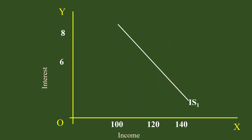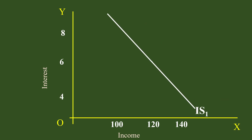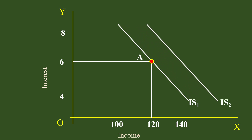We shall now turn to shifting of the curves. First, we shall take the shifting of the IS curve. Shifting in simple terms means changing the position. Shift can take place in two ways. IS1 is in its initial position. Point A on it shows Rs.120 income and 6% interest. The curve moves to the right due to an increase in autonomous investment. IS2 is the new curve. At each interest rate, income increases. This is called rightward shift.